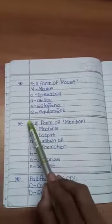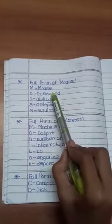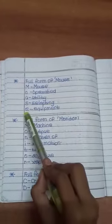Full form of mouse. M means mouse, O means operated, U means utility, S means selecting, E means equipment.